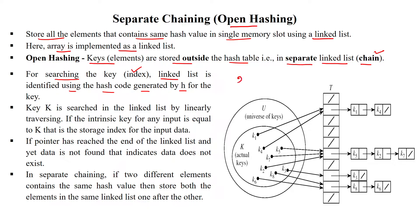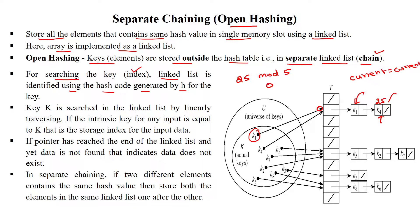For example, suppose I want to search for the key 25 in the given hash data structure. Using mod table size 5, it will be accessed from index 0. If 25 is at the second node in the linked list, it will compare the data with the first node and traverse using current node equal to current dot next, until the data is found or not matched.